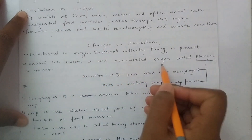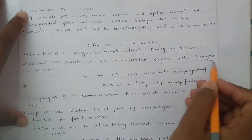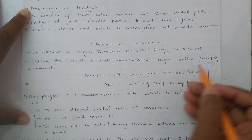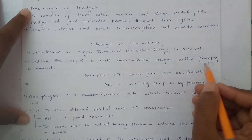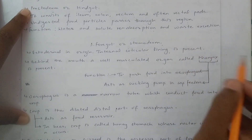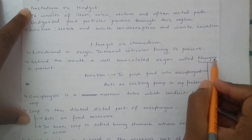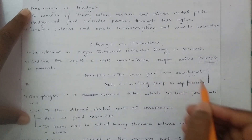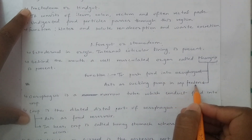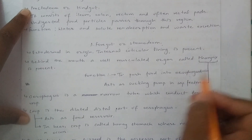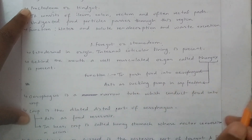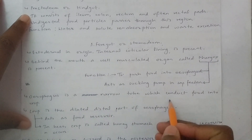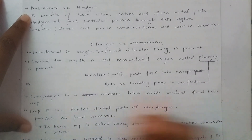Behind the mouth, an oval musculated organ called pharynx is present. The pharynx functions in conducting food to the esophagus. It acts as a sucking pump in sap feeders. The esophagus is a narrow tube which conducts food into the crop.